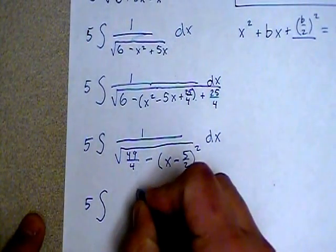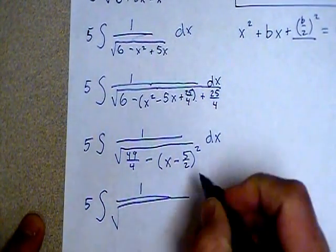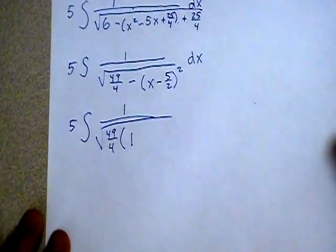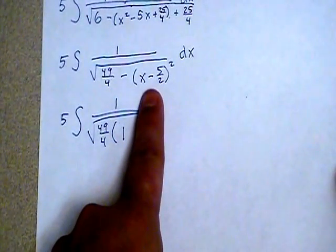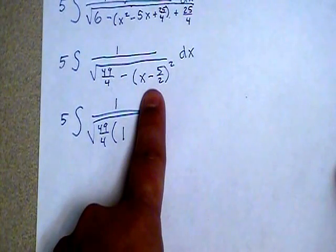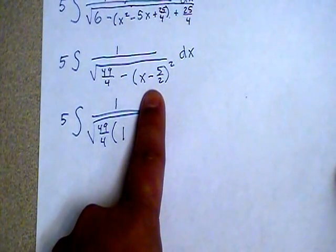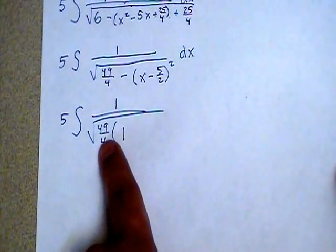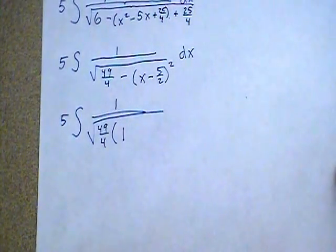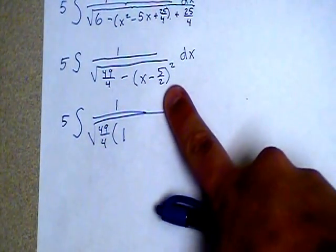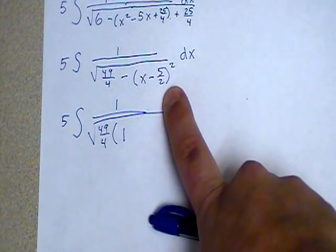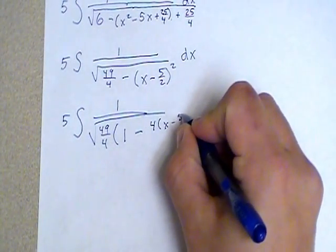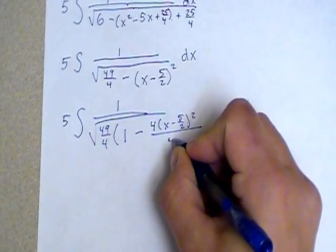So I have a 5 out here already. Underneath the root, I'm going to factor 49 over 4 out of both terms. Factoring it out of the first term gives us the 1 that we needed. Factoring it out of the second term, now this is going to get kind of goofy because there's not really a coefficient in front of this. If I'm factoring this number out of that term, I'm going to have to divide this term by what I'm taking out of it, so that when I distribute, I get back to where I was on this previous line. So I'm going to have to divide this by 49 over 4. Dividing by 49 over 4 is the same as multiplying by the reciprocal, 4 over 49, so I'm just going to do that. So I'm going to multiply by 4, and then I have this in that numerator over 49.